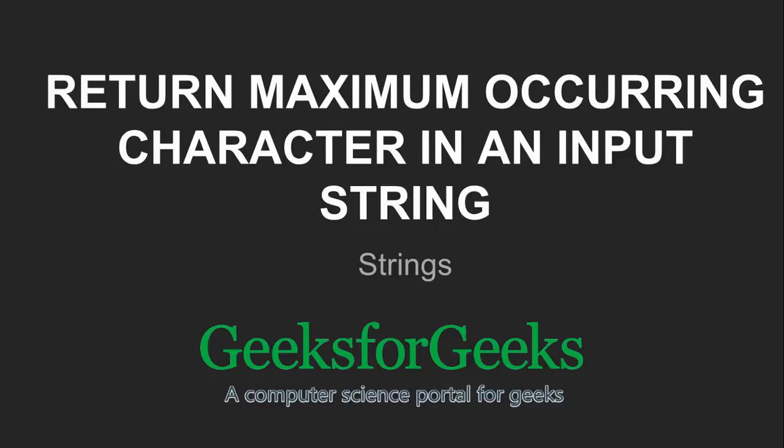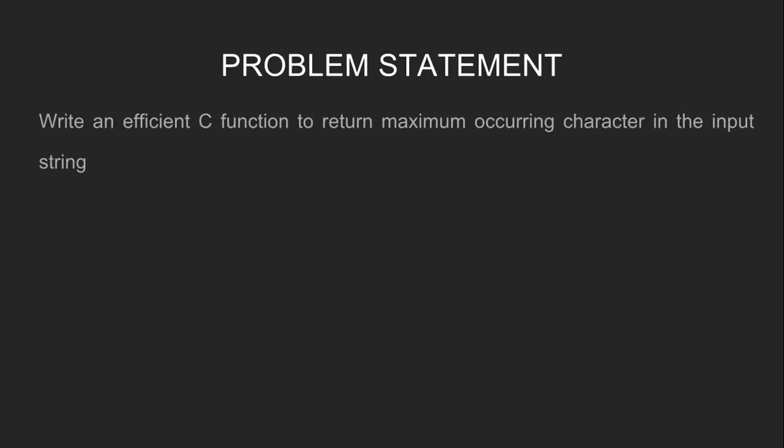Hi friends, welcome to GeeksforGeeks. This is a video tutorial on how to return the maximum occurring character in an input string. Let's look at the problem statement: write an efficient C function to return the maximum occurring character in the input string. For example, if the input string is 'test', then the function should return 't'.